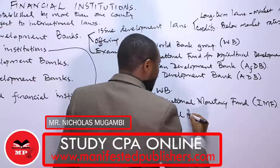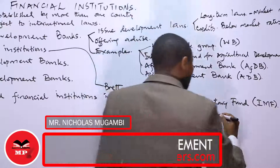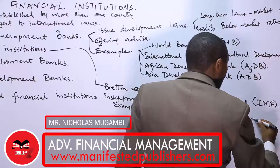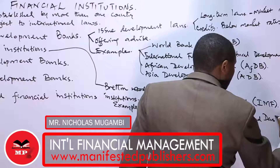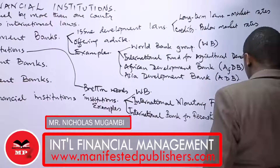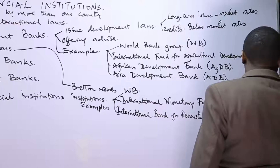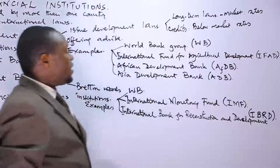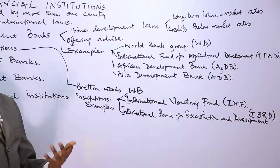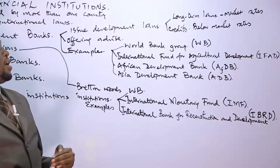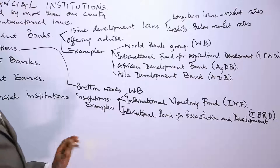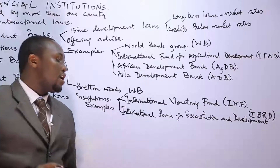Another example is the International Bank for Reconstruction and Development, commonly abbreviated as IBRD. The major driving factor for the formation of Bretton Woods institutions was to rebuild Europe and rebuild those countries that were so much affected by the aftermath of World War Two. Therefore, the name: International Bank for Reconstruction and Development.